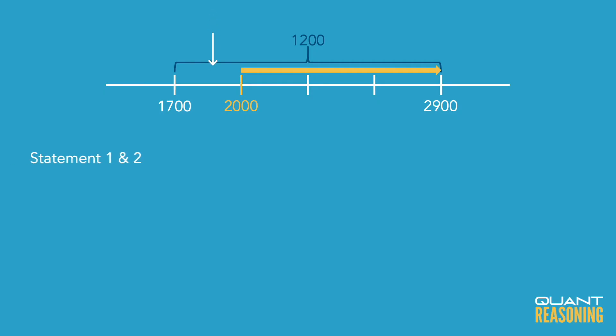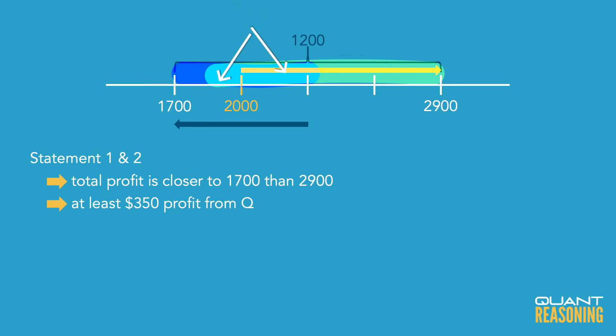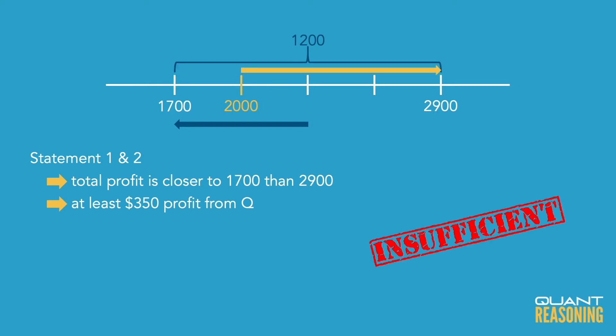When we combine the statements, I'm to the right of the bottom one eighth and in the bottom half — but am I in the bottom quarter or not? I have no idea. Even with both statements combined, we still can't determine whether we're in the bottom third or the top two thirds, so I can confidently pick answer choice E.